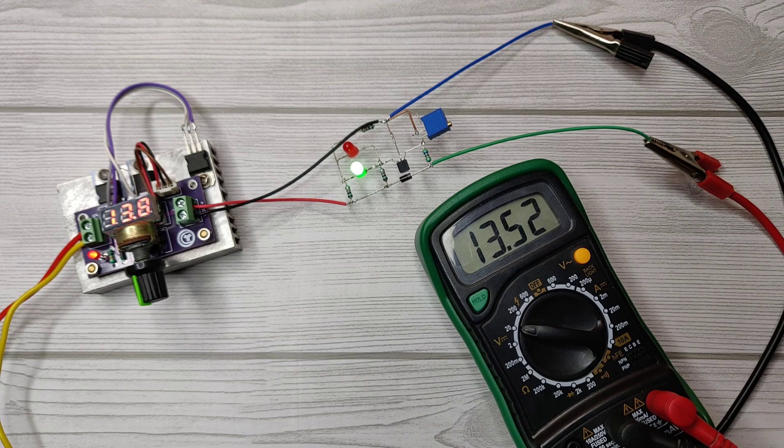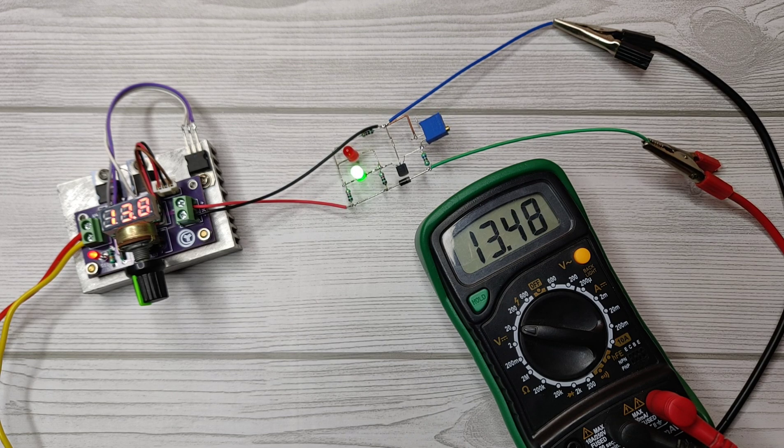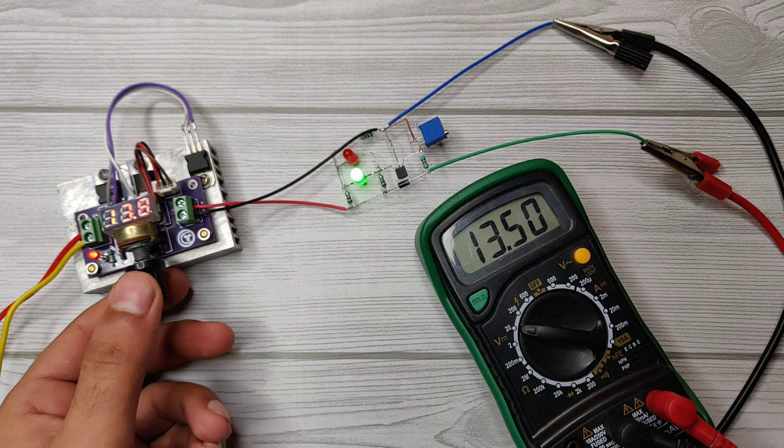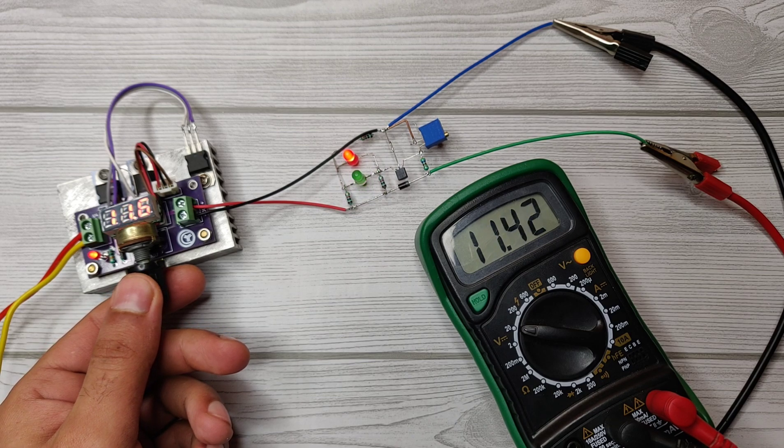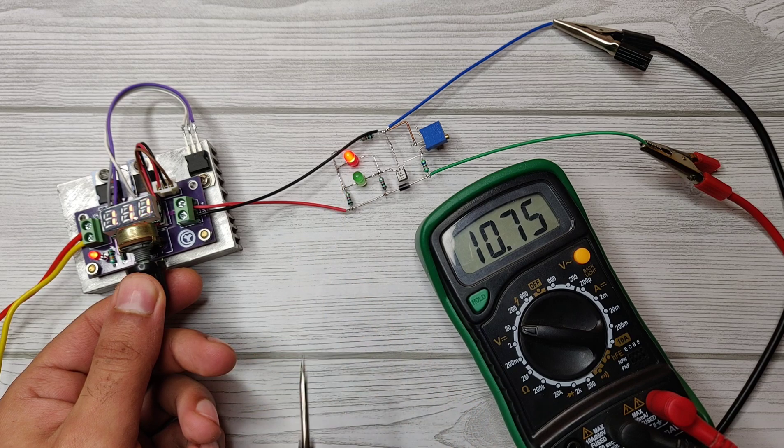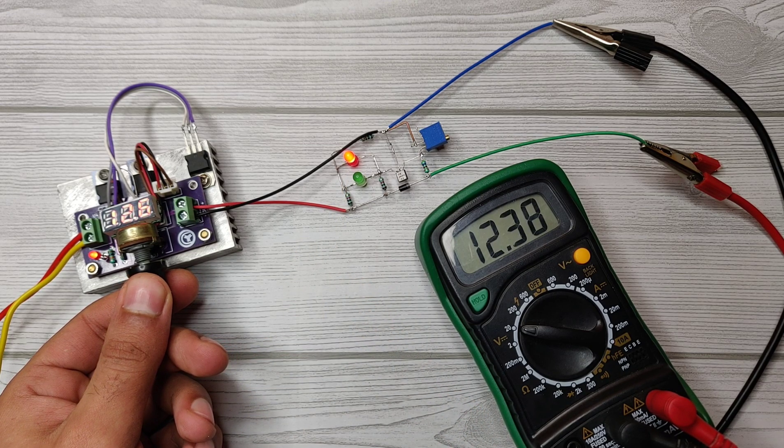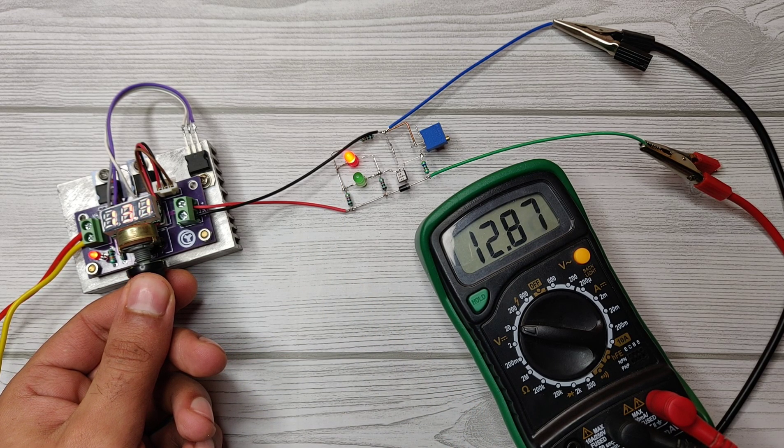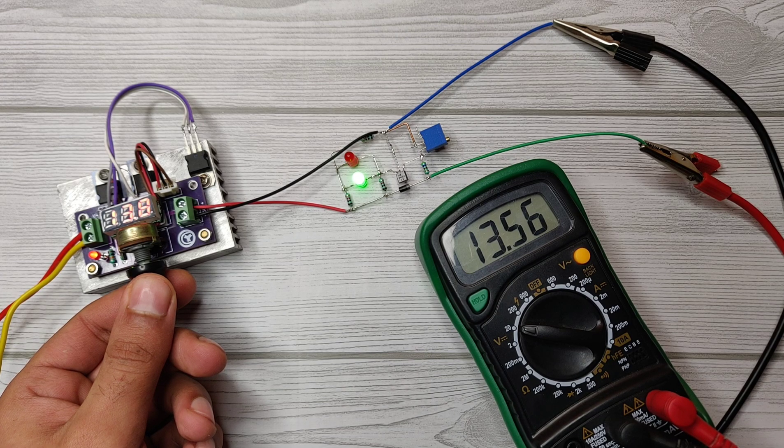Now it's calibrated for 13.5 volts. So whenever during charging the battery voltage is below 13.5, the red LED will remain on indicating charging. And when the battery voltage touches 13.5 volts, the green LED will indicate fully charged.